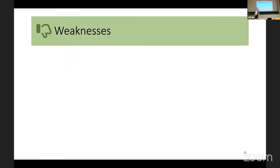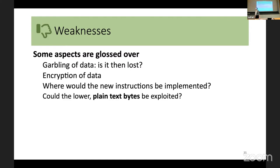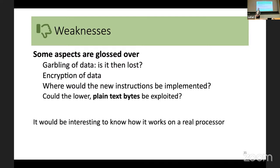Some weaknesses of the paper: some aspects were not explained as deeply as they should have been. The garbling of data is mentioned but not really explained — we don't know exactly how it's garbled, whether the data is lost, or if it induces any performance overhead. They don't really talk in detail about the encryption of the data. They don't mention where new instructions would be implemented. Also, it's not discussed whether the lower plain-text bytes could be exploited. And it would be interesting to know how this works on a real processor, since the paper only mentions simulations — something for further research.